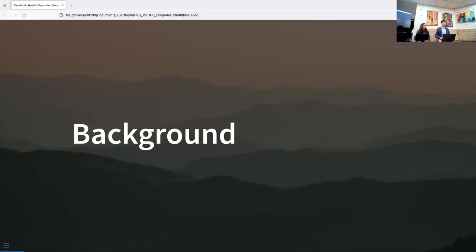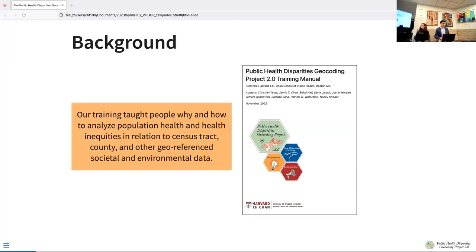For the next little bit, I'd like to talk about the background to the project and how we ended up deciding to do this project. The main idea was that our training taught people why and how to analyze population health and health inequities in relation to census tract, county, and other geo-referenced societal and environmental data. These trainings were conducted over two four-day workshops offered in June and July of 2022. We invited 75 workshop attendants for each of those sessions from diverse backgrounds, including folks from the CDC, policy think tanks, advocacy groups, and of course researchers, professors, students, and staff from academia. I want to emphasize that these workshops were offered completely free of cost, and they were funded through the American Cancer Society Clinical Research Professorship Award to Nancy Krieger.